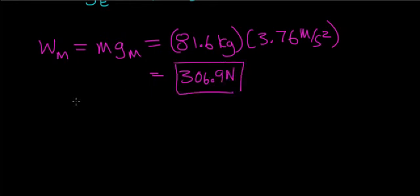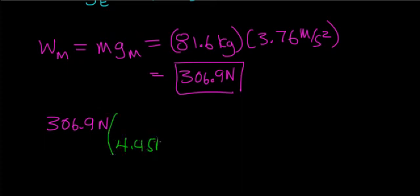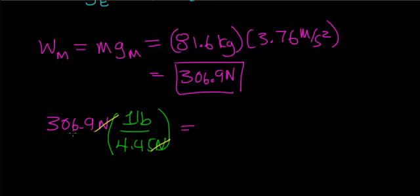Now let's see what that number works out to be in units of pounds. You have 306.9 newtons, and you're going to convert that over to pounds. You know that 4.45 newtons equals one pound. Notice that units of newtons cancel out, and when you divide 306.9 by 4.45, you get 68.9 pounds.